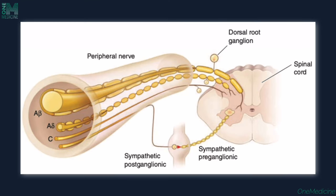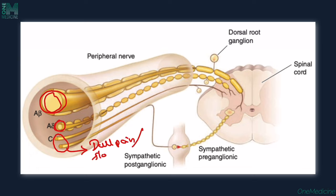From the peripheral nerve cross-section, we have A-beta fibers which are very thick and myelinated, A-delta fibers which are also thick and myelinated, whereas C fibers are small and unmyelinated. C fibers carry the dull or slow pain, whereas A-delta fibers carry the fast pain.